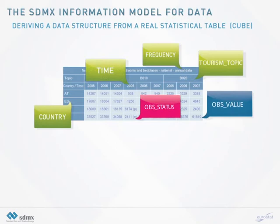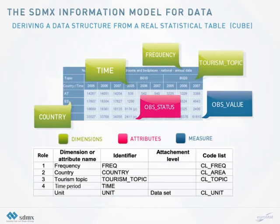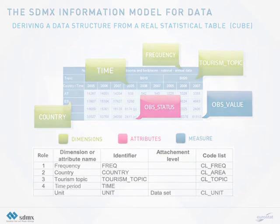The observation status is defined by footnotes such as estimated or provisional. Frequency, country, tourism topic, and time are required to identify the statistics — they act as dimensions. The observation status qualifies figures as an attribute at the observation level. The observation value, the actual figure, is what we call measure. The second table is a simplified formal definition of the corresponding data structure.